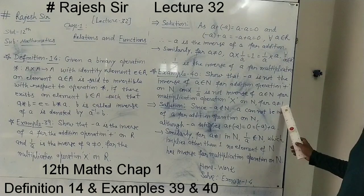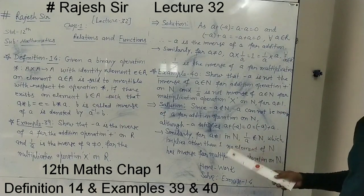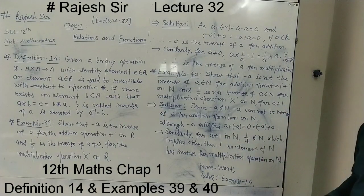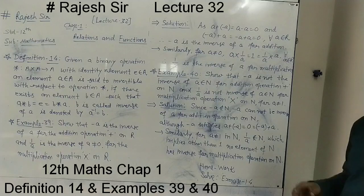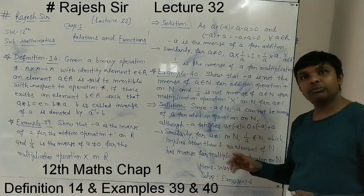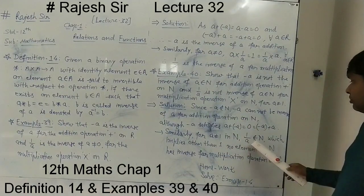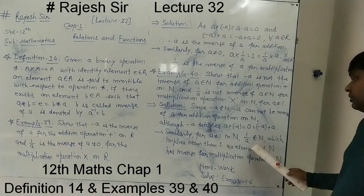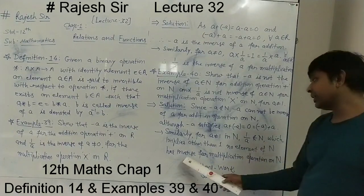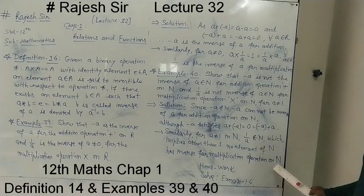We don't consider 1, and for all other elements in ℕ — 2, 3, 4, 5, 6, whatever you take — the inverse would be 1 upon 2, 1 upon 3, 1 upon 4, and these do not belong to ℕ. So they will not have an inverse for the multiplication operation.